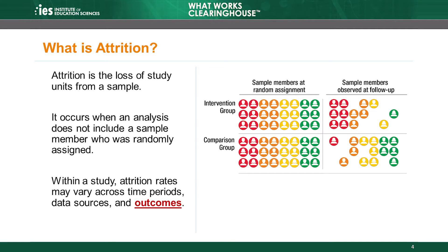The example illustrated here shows a study sample at random assignment and follow-up. The boxes on the left illustrate the full sample of 48 randomly assigned individuals — 24 in the intervention group and 24 in the comparison group. By the time of the first follow-up, only a subset of those 48 individuals remain. The boxes on the right show outcome data for only 13 individuals in the intervention group and 14 in the comparison group at follow-up.